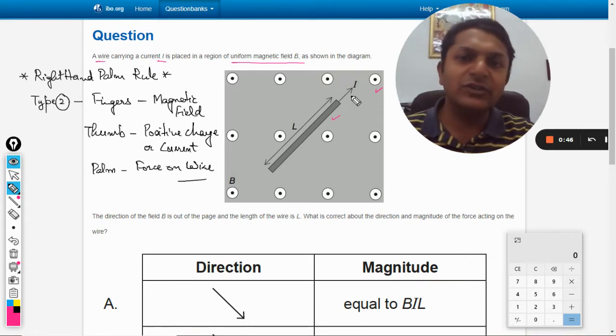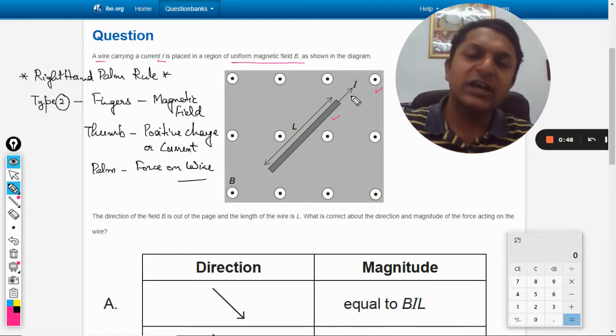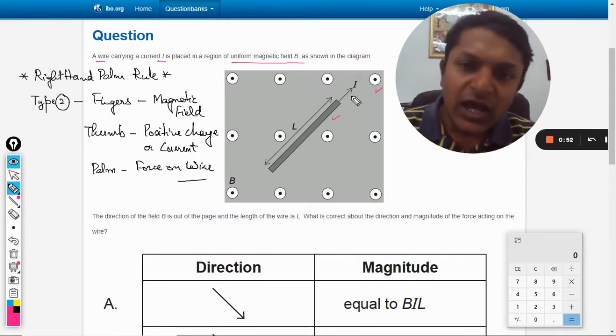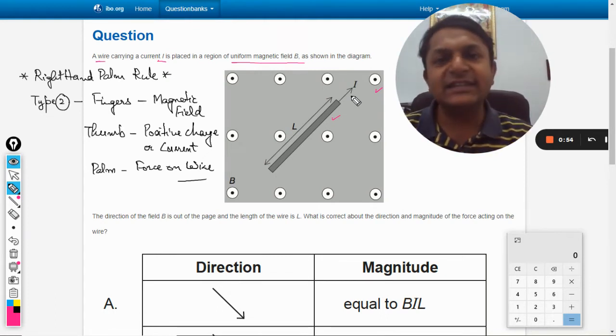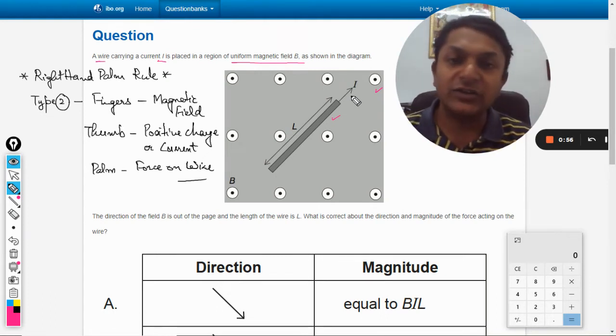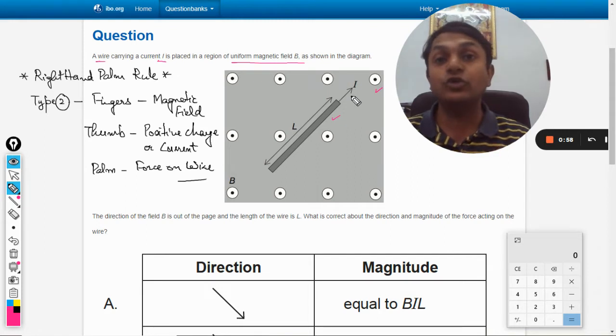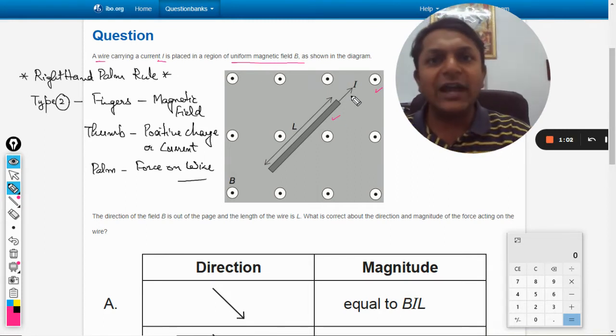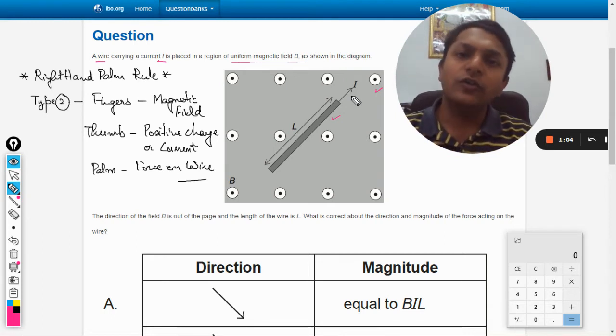This is the first of the questions that we are solving in which we are finding the force on a current carrying conductor. Earlier we have used the same law to find the force on moving positive charge.